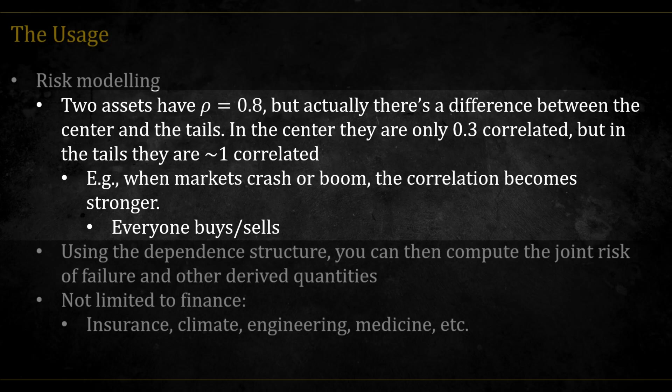Imagine two assets with an overall correlation of 0.8. In the center, during normal market conditions, the correlation might drop to 0.3. But in the tails, during crashes or booms, it can shoot up close to 1.